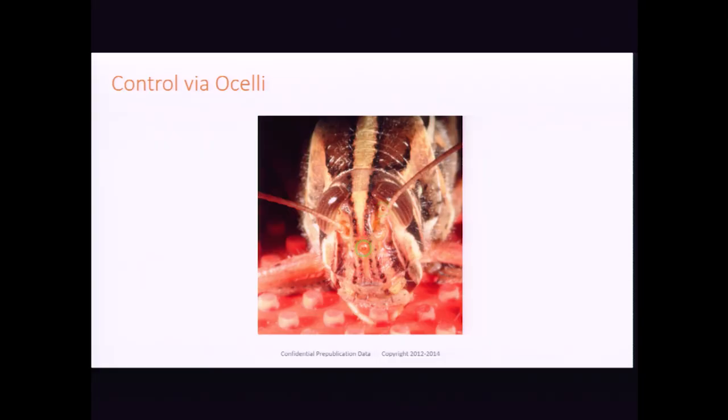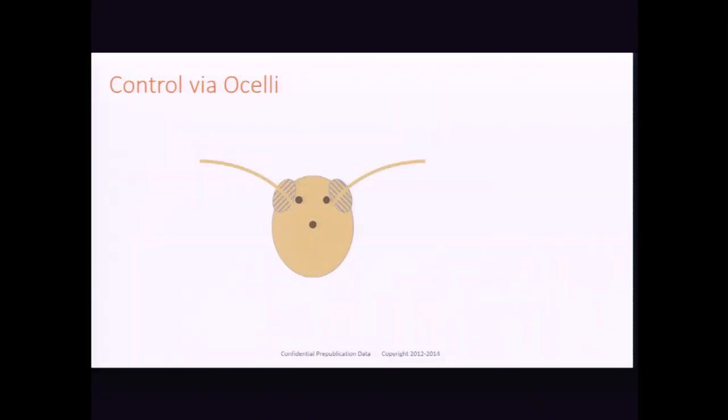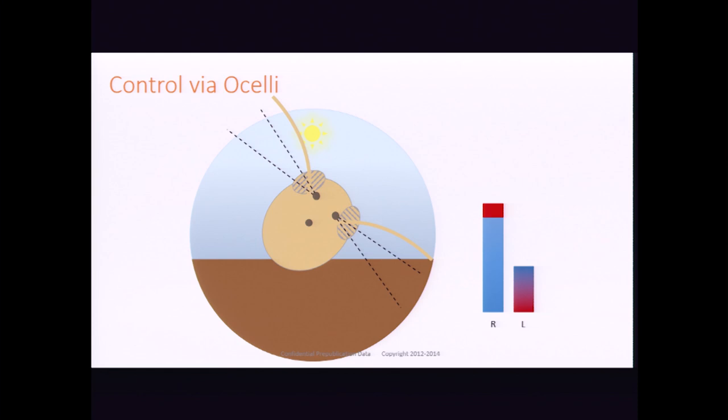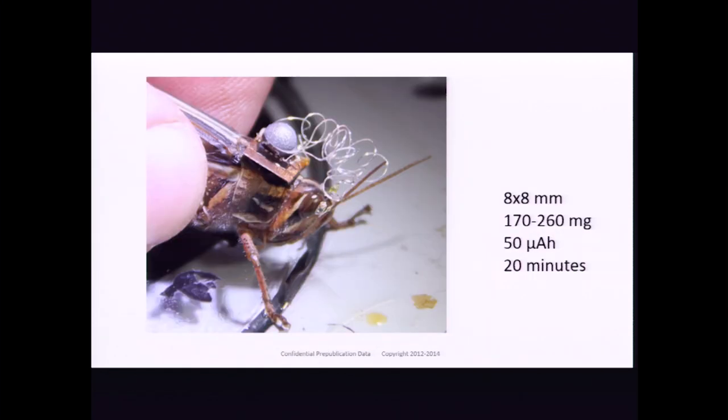And they don't have enough receptors to do any spatial discrimination. It's generally hypothesized that what these things do is take the differential level of UV between these points to do head adjustments under the assumption that the insect evolutionarily has come to the conclusion there's more UV coming from above than below. So what we've done, we looked at this, and we thought this would be really cool. What if we fed these insects false information?